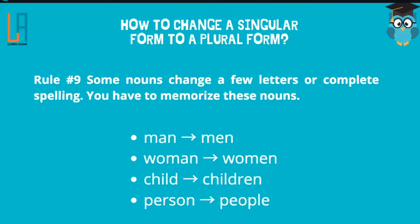Rule number nine: some nouns change a few letters or their complete spelling. You have to memorize these because they are irregular nouns — they don't follow the regular noun rules. For example, man becomes men, woman becomes women, child becomes children, and person becomes people. You have to memorize these.